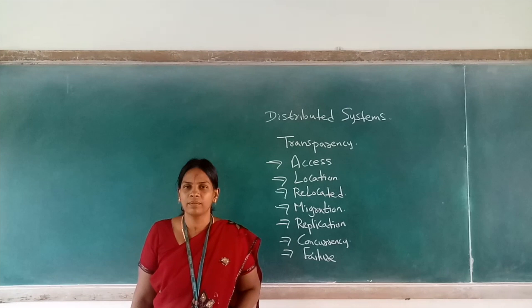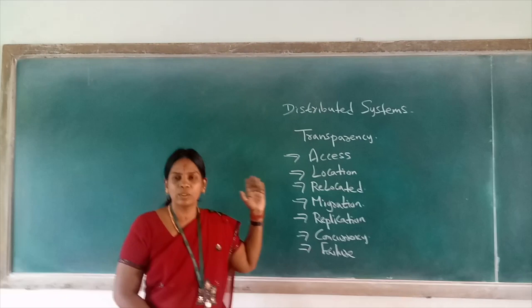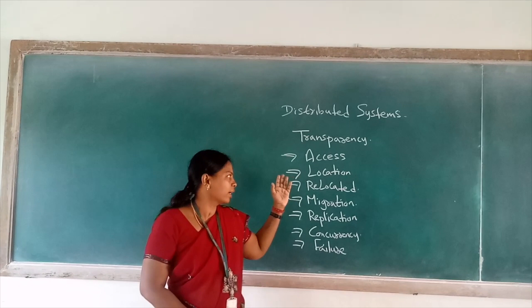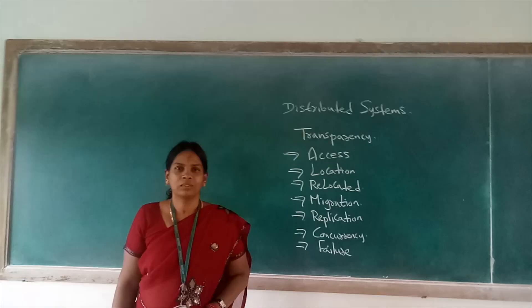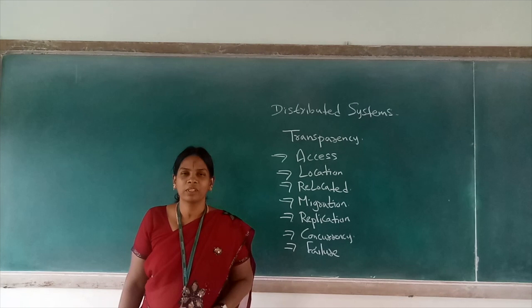To talk about how the distributed system works, we can talk about something called transparency. Different kinds of transparency happen due to these factors. The kinds of transparency include access, location, relocation, migration, replication, concurrency, and failure transparency.